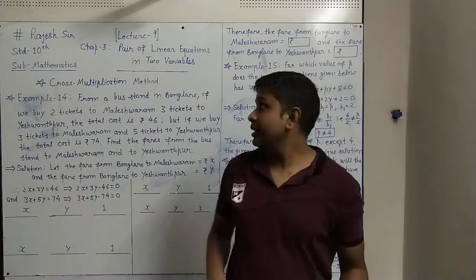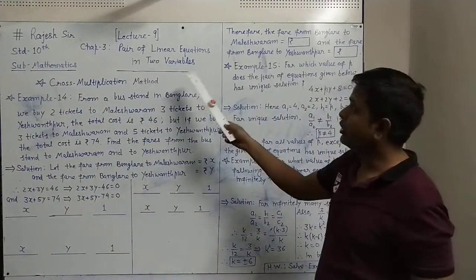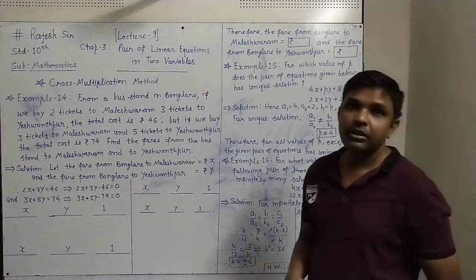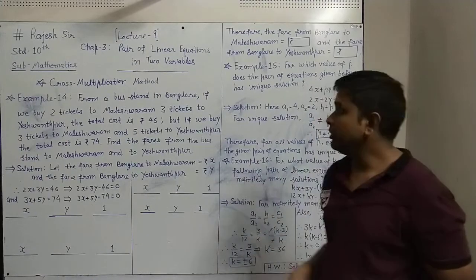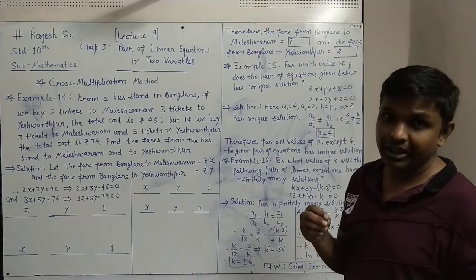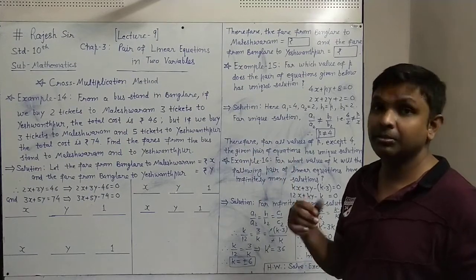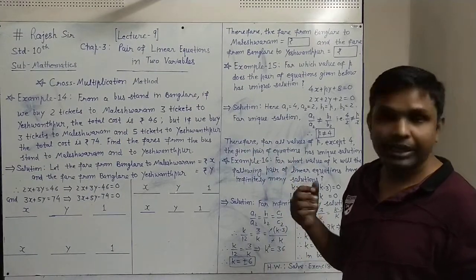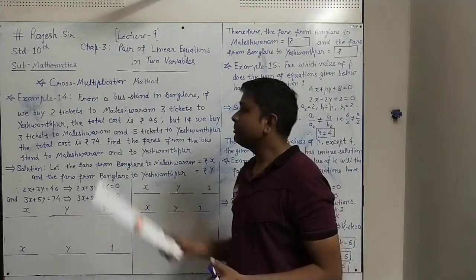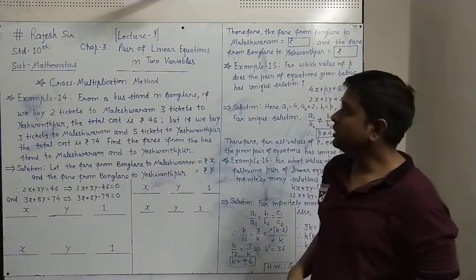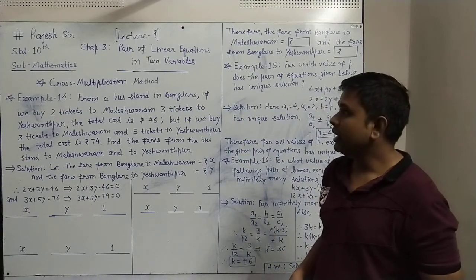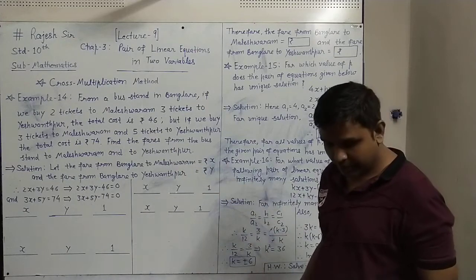Hello students, welcome to Standard 10 Mathematics, Chapter 3: Pair of Linear Equations in 2 Variables. This is lecture number 9. Before this lecture we have seen methods of graphical method, substitution method, and elimination method to solve the pair of linear equations. Now we have the cross multiplication method.